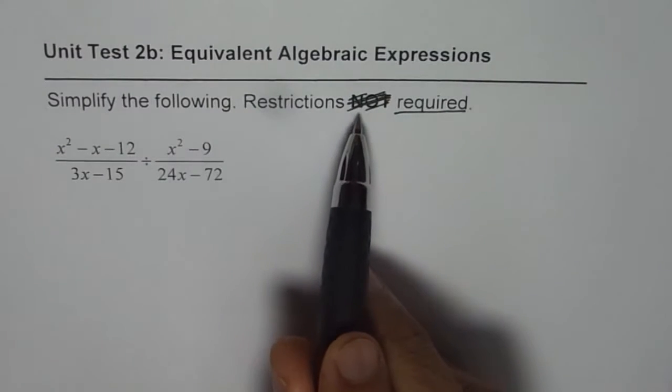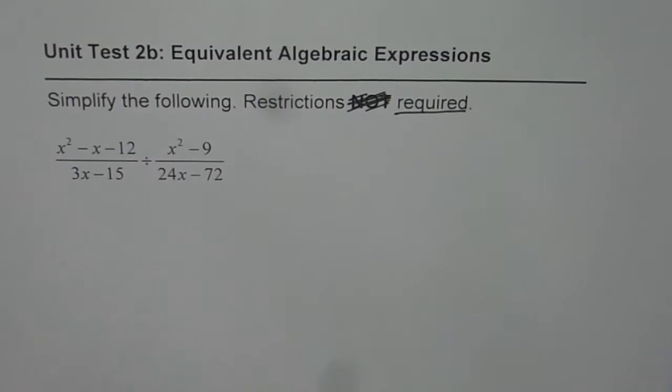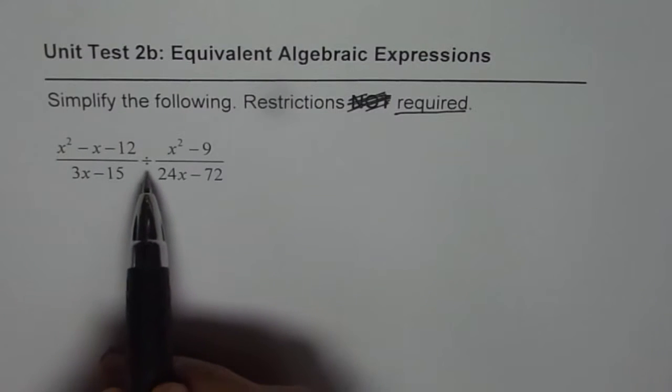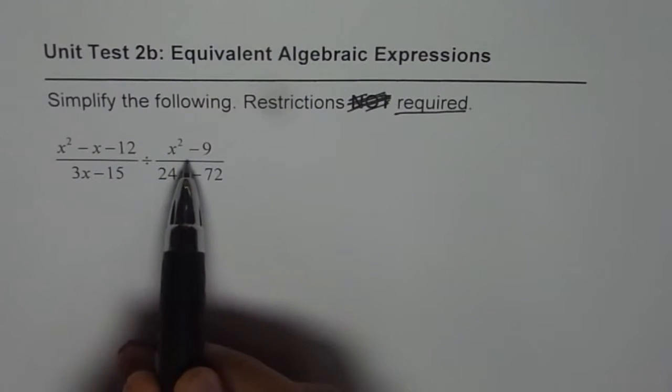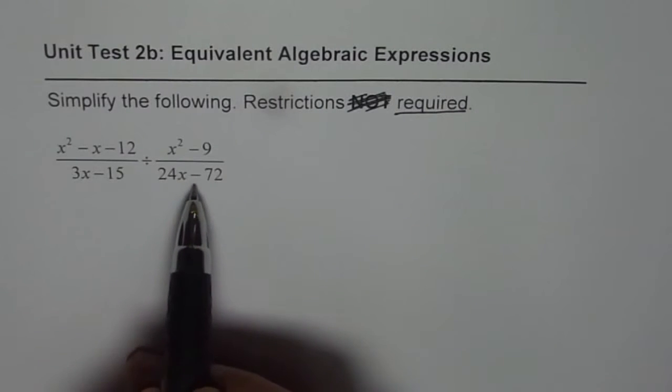Earlier in the question restrictions were not required, but I thought let us see how to write restrictions for this division statement. So, we have x squared minus x minus 12 divided by 3x minus 15 divided by x squared minus 9 over 24x minus 72.